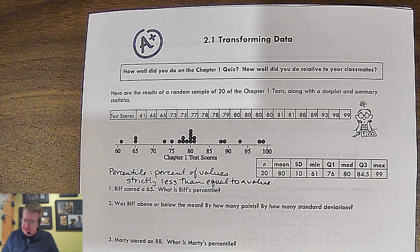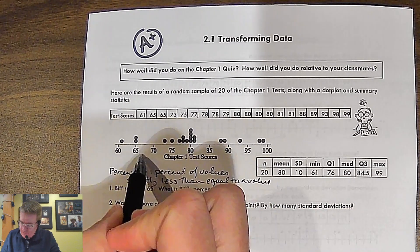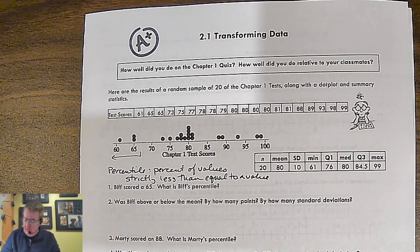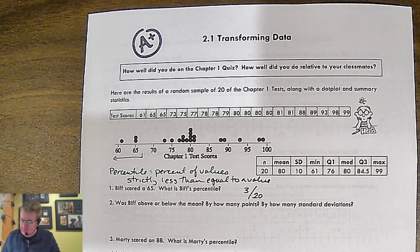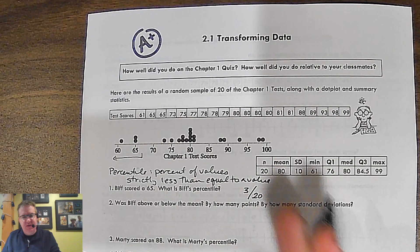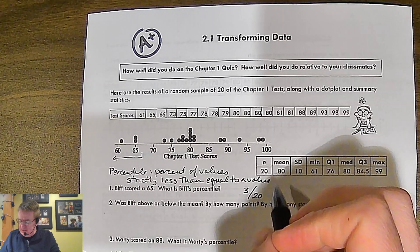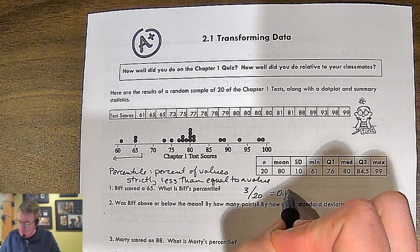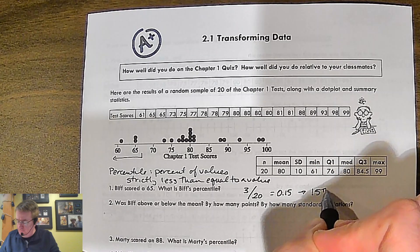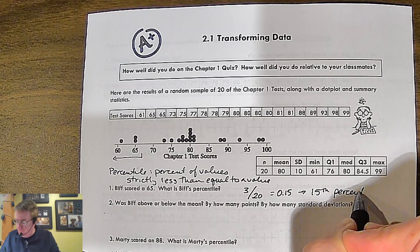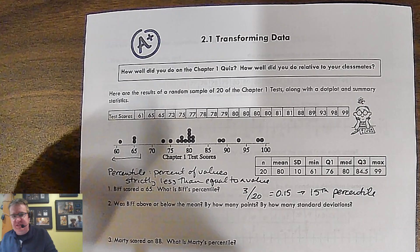So that's what percentiles do. It kind of gives a nice number in terms of, this is where, if we lined everybody up, this is where that score falls. Okay. So BIF is at 65. What's BIF's percentile? Well, at 65, we have one, two, three, three out of the 20 scores are at 65 or less. So because of that, then we would say, is the decimals 0.15. And so we would say, call that the 15th percentile. That means BIF did better than, or met the scores of 15% of his class.